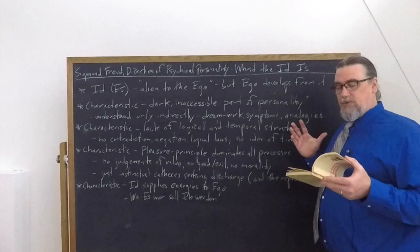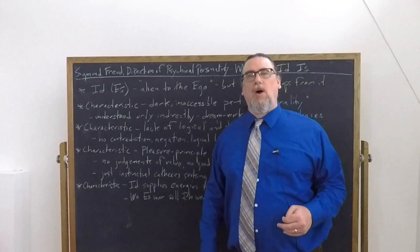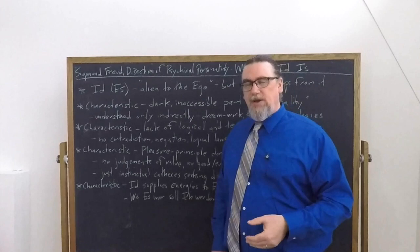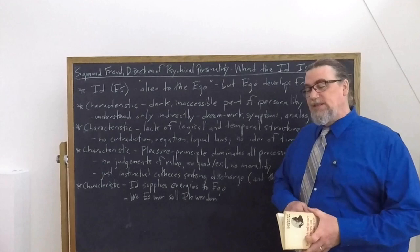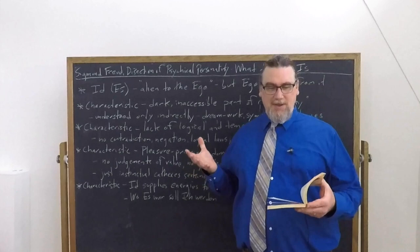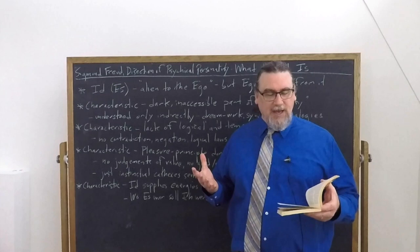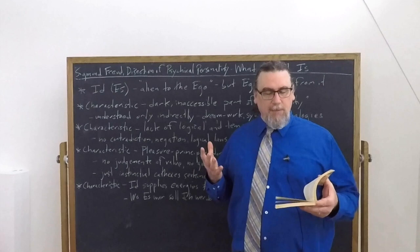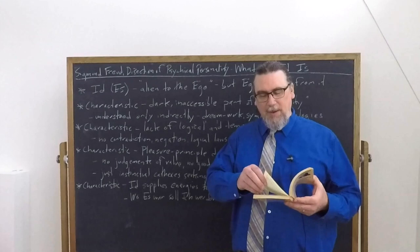He also says, this is true above all of the law of contradiction. So when we talk about the laws of thought, we often talk about law of excluded middle law of contradiction. We can come up with a whole bunch of these in logic. And that's often what we teach in logic classes. Freud says that the id does not respect these. It's just not part of it. So he says, contrary impulses exist side by side without canceling each other out or diminishing each other at most, they may converge to form compromises.